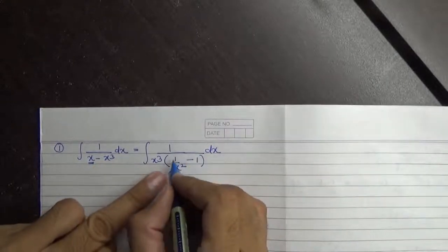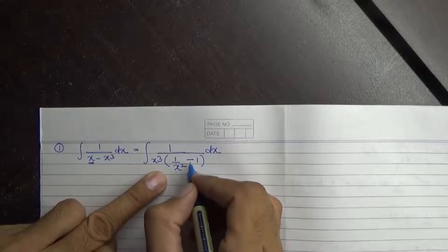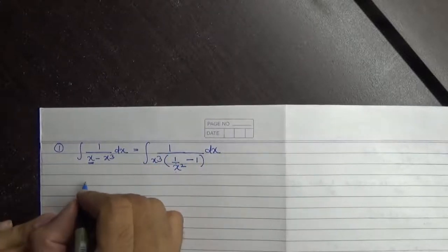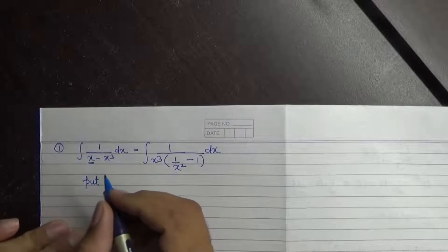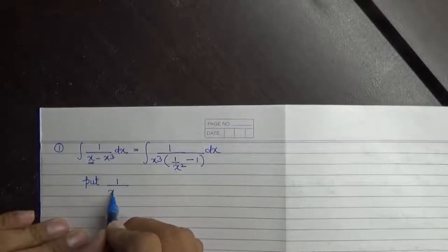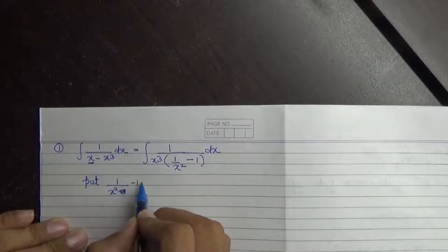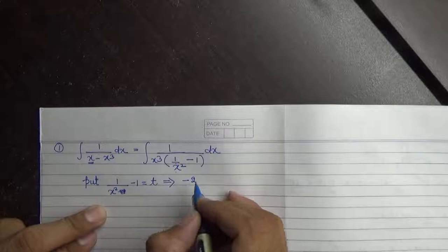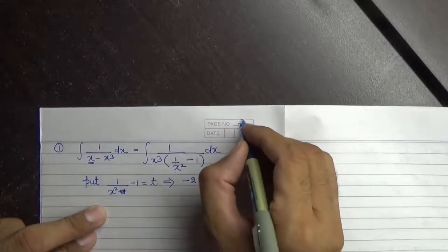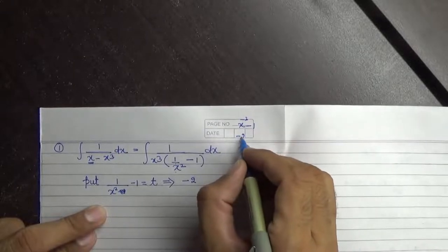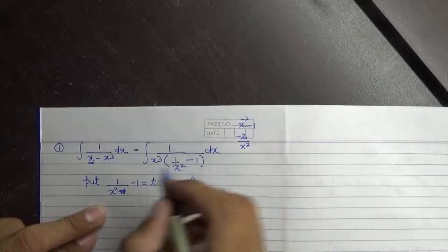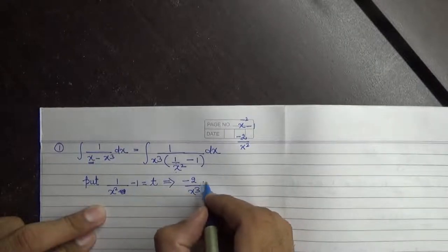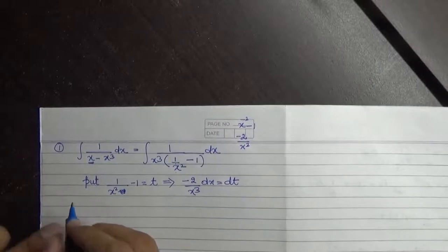अब क्या करेंगे: 1/(x² - 1) इस part को t put कर सकते हैं क्योंकि इसका derivative 1/x³ type का आएगा। जिसका derivative वह उस term को t put कर लेते हैं। so 1/(x² - 1) is equal to t। इसका derivative करते हैं: 1/x² को x⁻² लिखेंगे, derivative होगा minus 2/x³, और जो minus 1 है उसका derivative 0, into dx = dt।